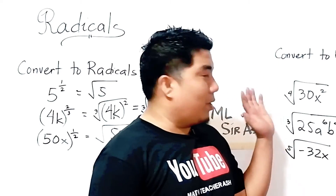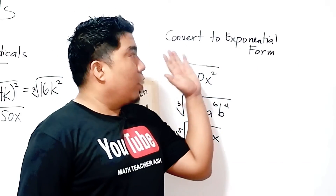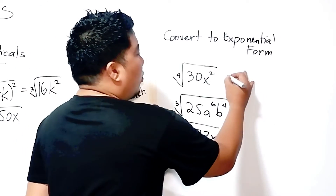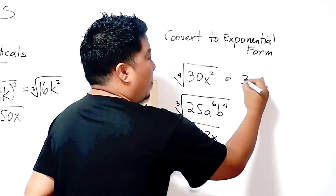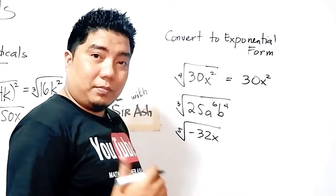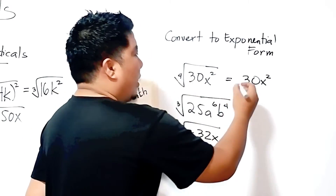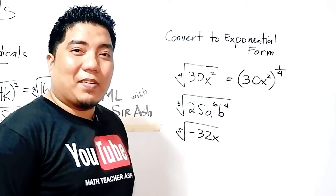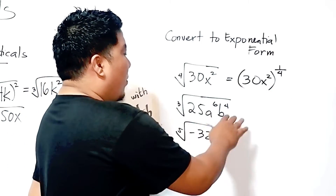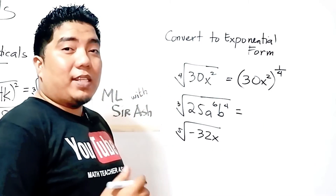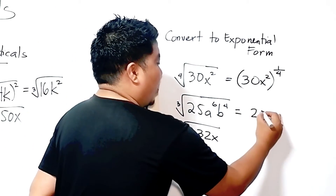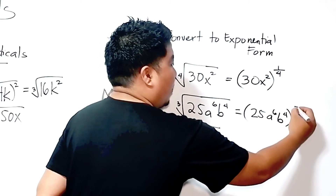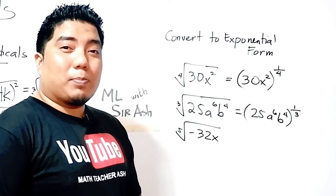Let us continue to our second set of given: convert the following into exponential form. Since these are radicals, what we do is write our base. Since this is a 4th root, the exponential form uses an exponent of 1 over 4. That is your final answer. How about the cube root of 25a⁶b⁴? We just write 25a⁶b⁴ to the power of 1 over 3, and that will be your exponential form.